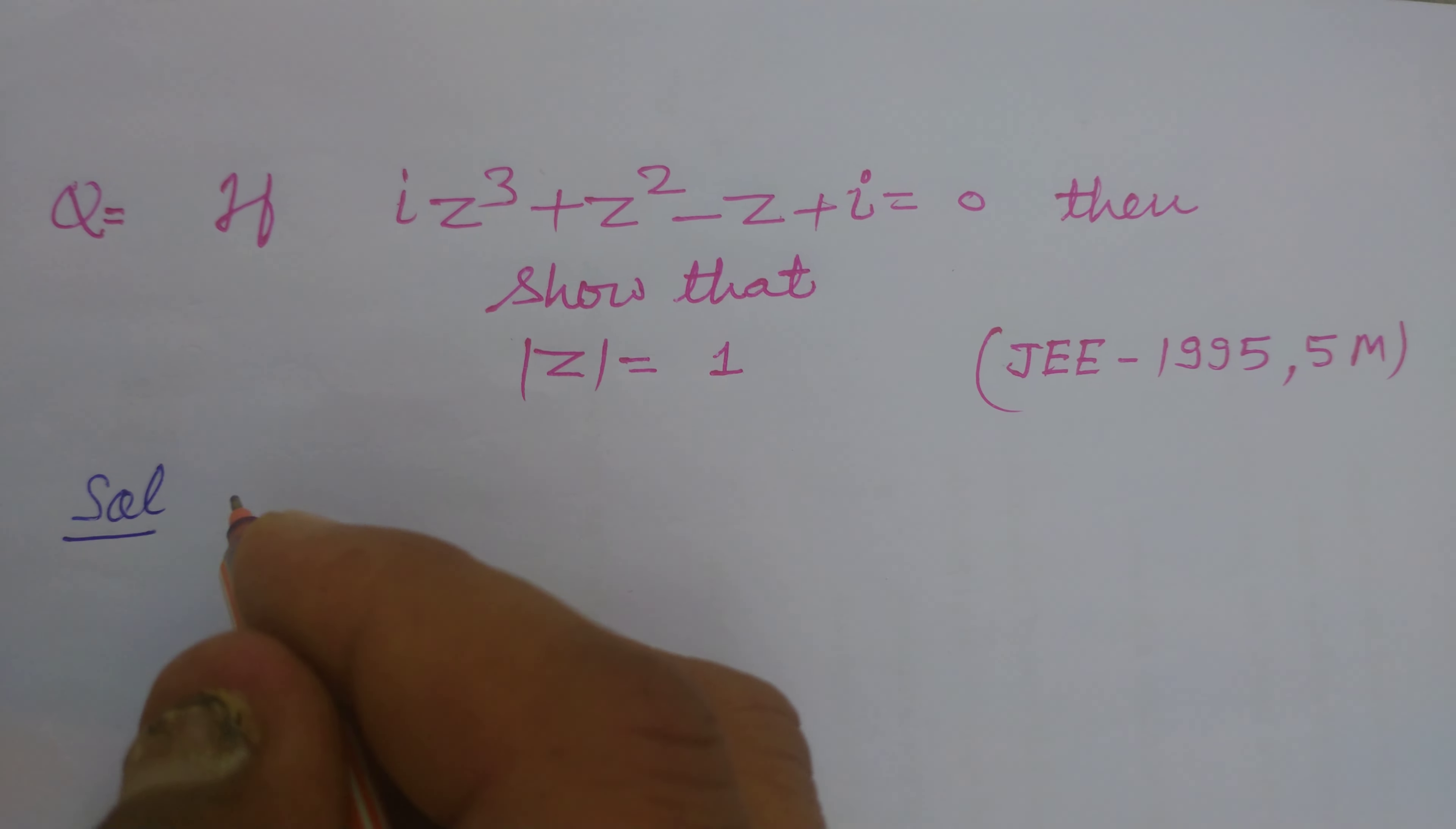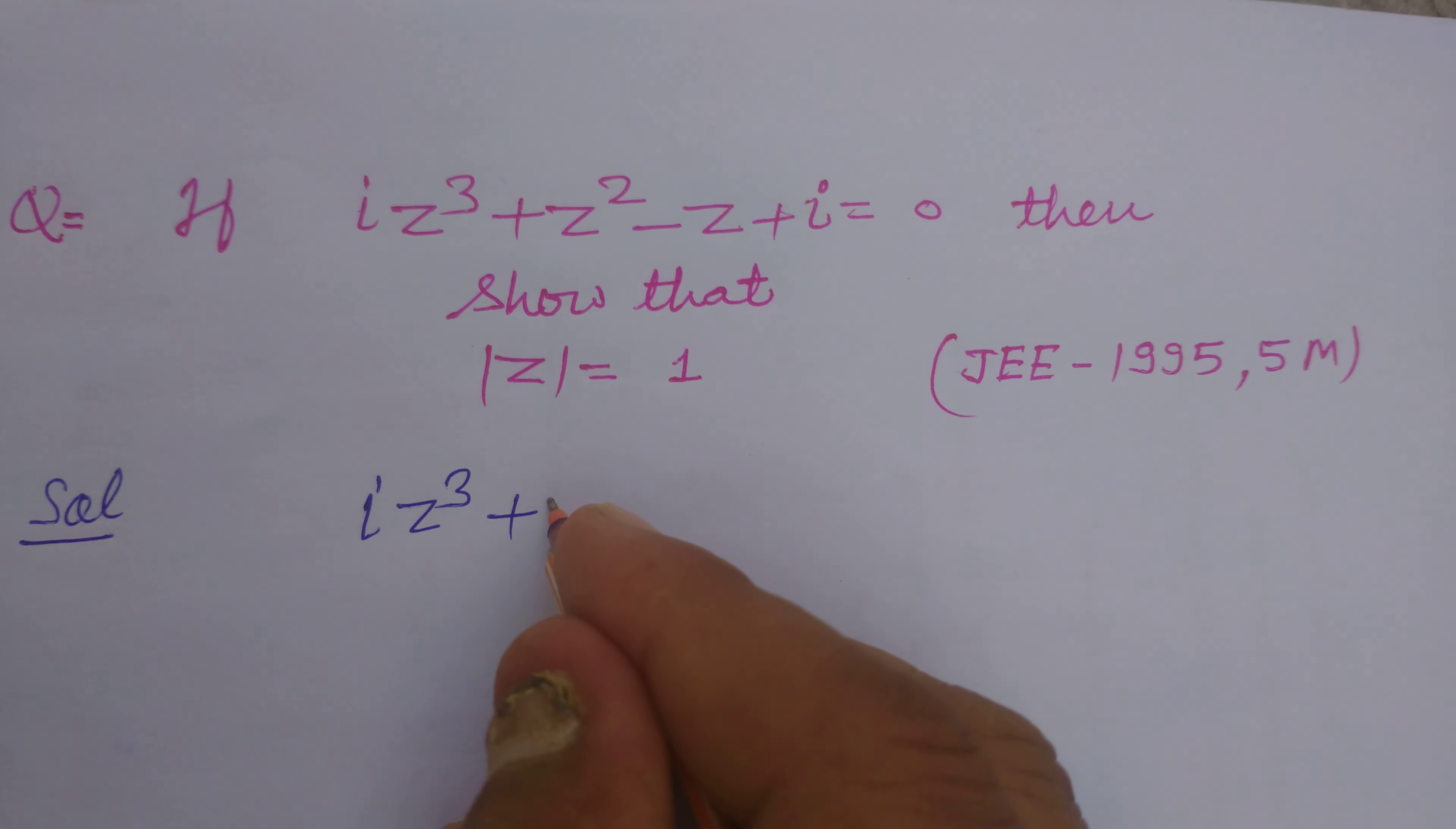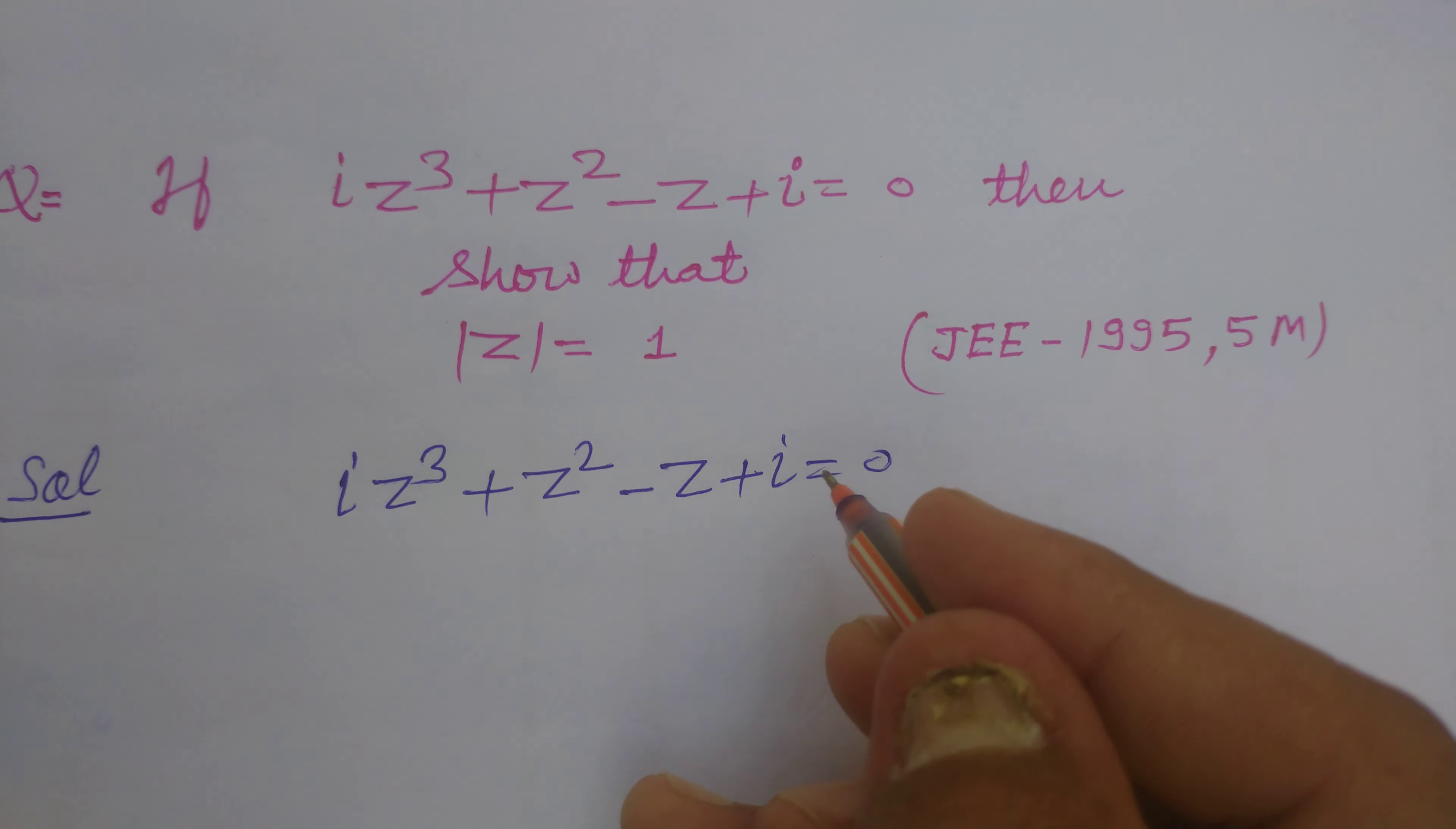So students, first we write the given condition: iota z cubed plus z squared minus z plus iota equals 0.